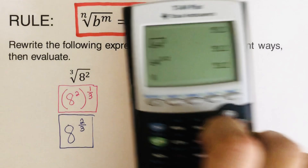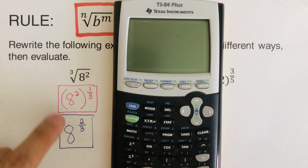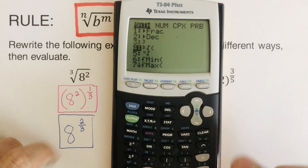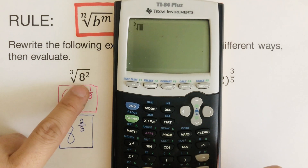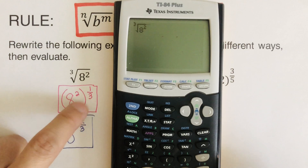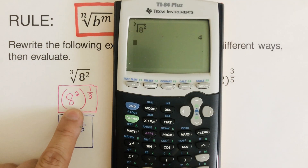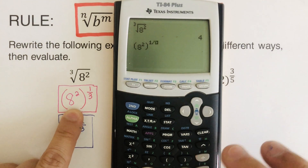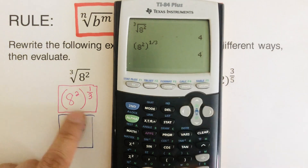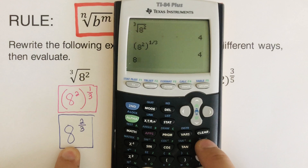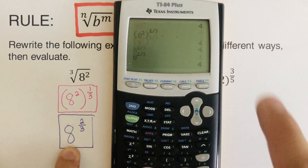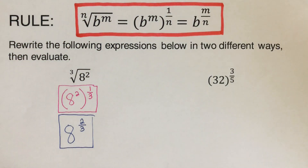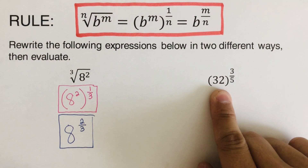Let's verify with the calculator. The cube root of 8 squared equals four. Then 8 squared raised to the power one-third also equals four. And 8 to the power two over three equals four. All three expressions are equivalent. Pause the video and try this one on your own!